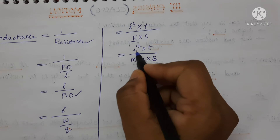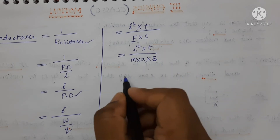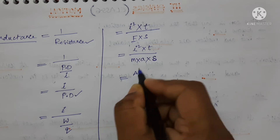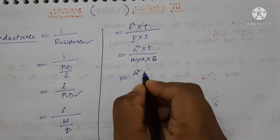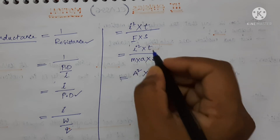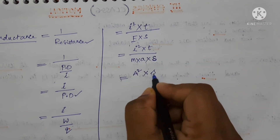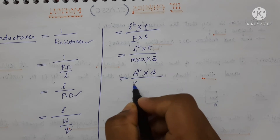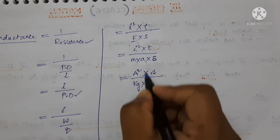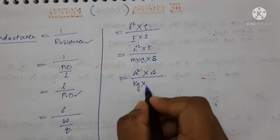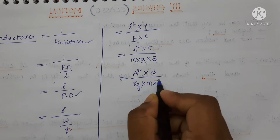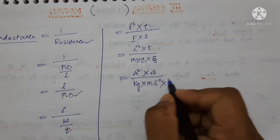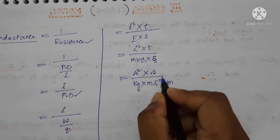Now write the SI unit for each of the terms. Current is ampere, and since it is squared, we write ampere square. T is time, so second. Mass is kg. For acceleration, it is meter per second square. And displacement S — its SI unit is meter.